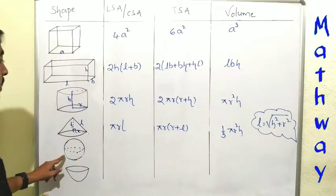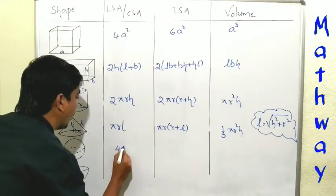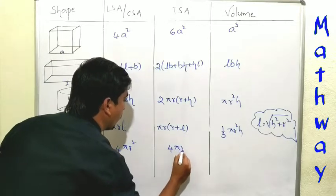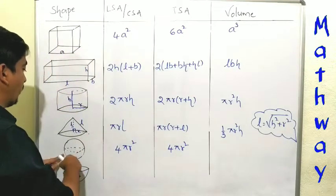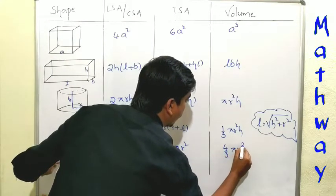Next, sphere. For sphere, total surface area and curved surface area both are same: 4πr². Total surface area also 4πr². Volume of the sphere is 4/3 πr³.